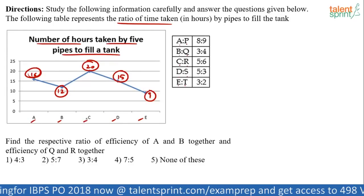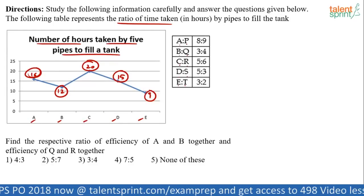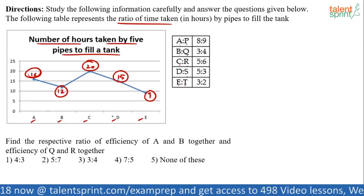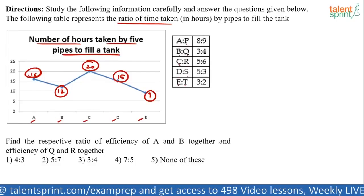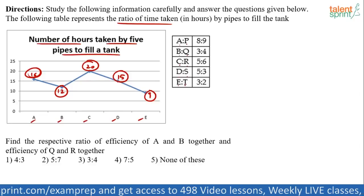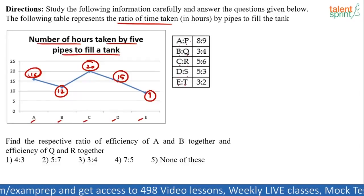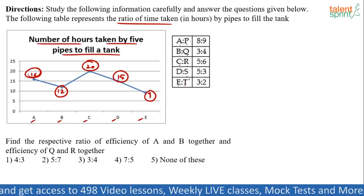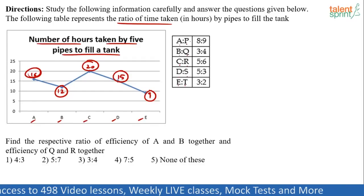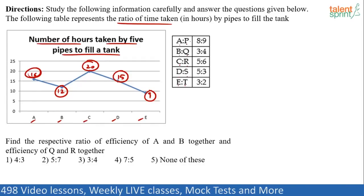So, what do we know? We know the time taken by A, B, C, D, E. Time taken by the five pipes, A, B, C, D, E. We know the ratio of A to P, B to Q, C to R, D to S and E to T. So, accordingly, we can find out the time taken by P, Q, R, S, T also. So, basically, directly or indirectly, this data has got the time taken by 10 pipes. A, B, C, D, E through the chart and P, Q, R, S, T through the table here.